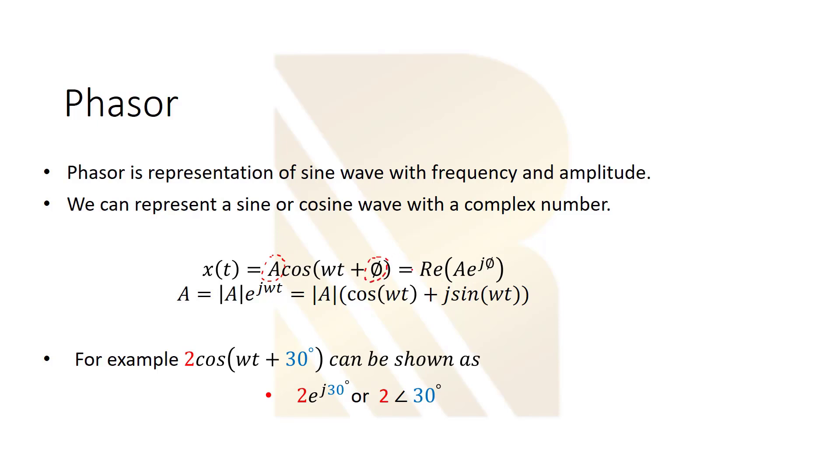So how can we show this in a phasor form? We can show with a real part of the complex number and this A also is a complex number here. So how can we show A here? A is equal to this value here. So A here, this is the amplitude. This is the magnitude of A and this is the phase.